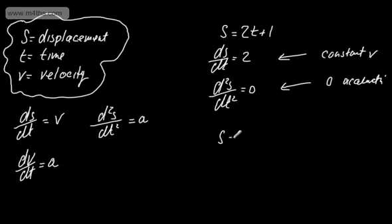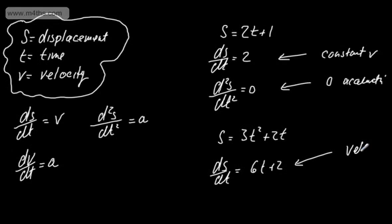Now if we had s is equal to let's say 3t² plus 2t, so we've got now displacement as a function of time. This time it's quadratic. ds/dt, we're going to have now 6t plus 2. I've multiplied down by the power and dropped the power by 1. So if I wanted to graph this now, what I would have is a linear function. So this now is velocity.